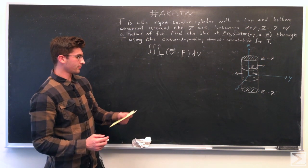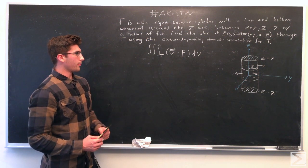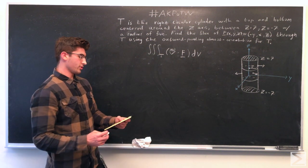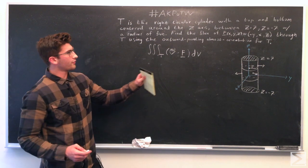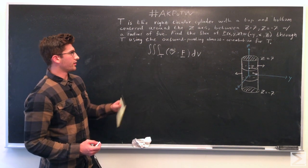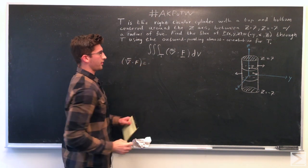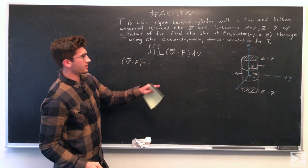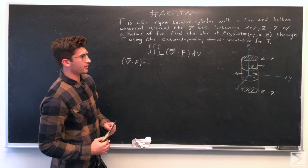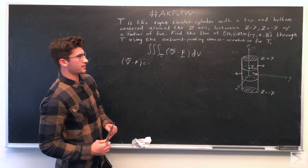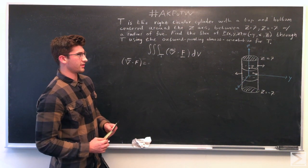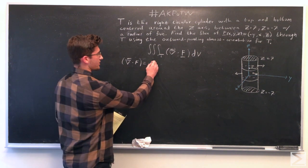So let's go ahead and mark our region of integration. Actually, before we do that, let's go ahead and find the divergence. So the divergence of this, since z is the only component that has a function of itself, the divergence is going to equal 1.